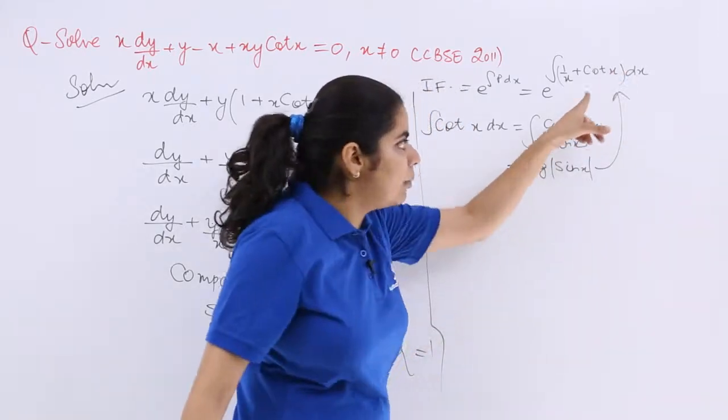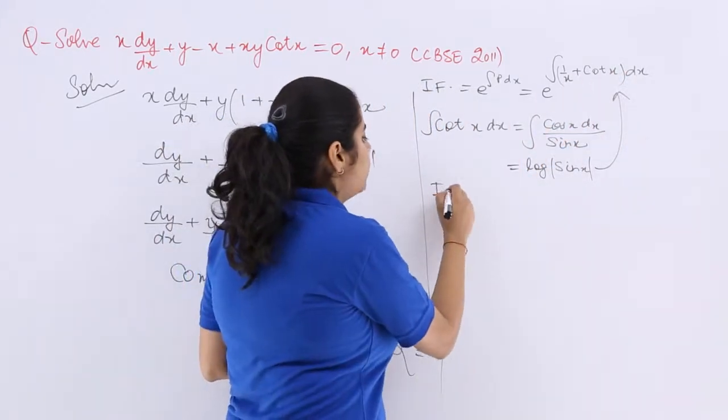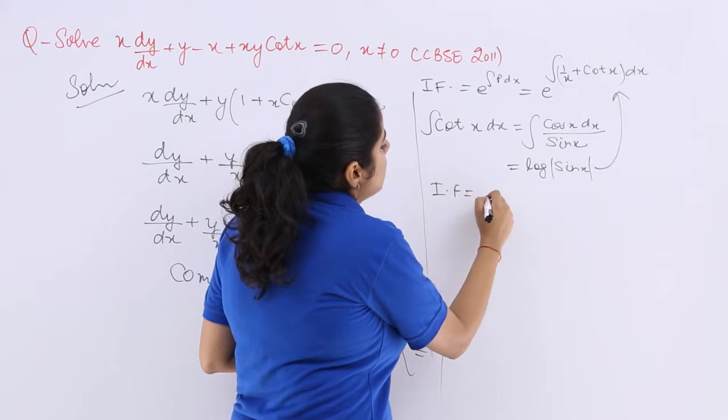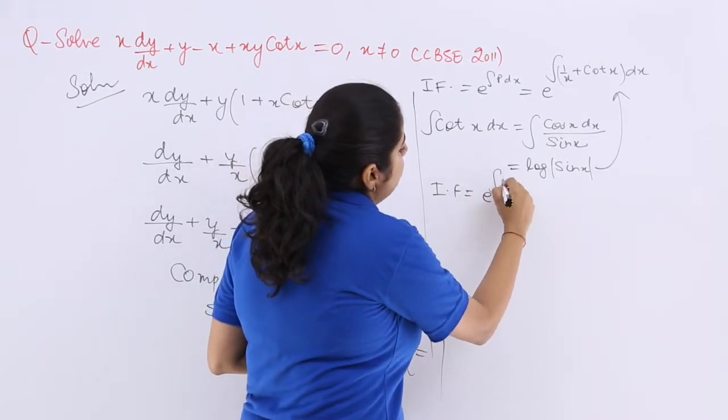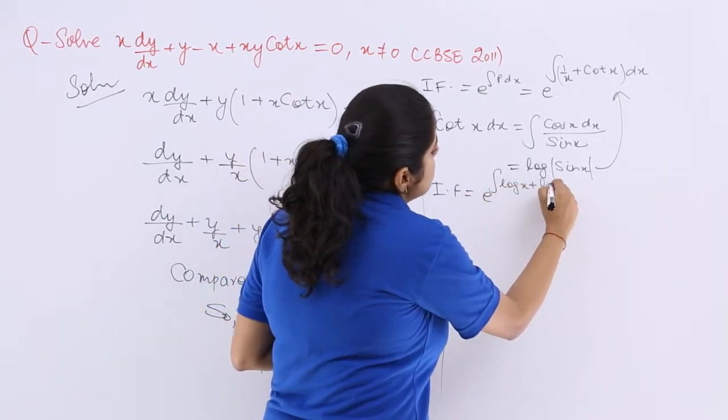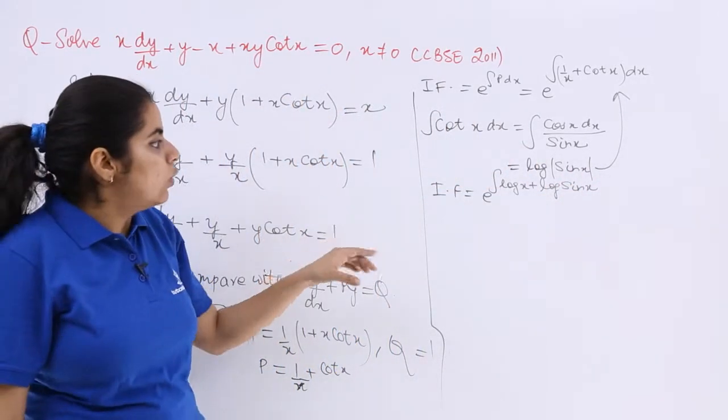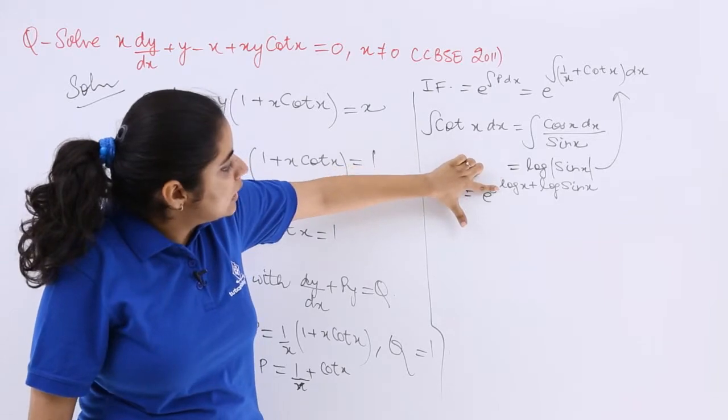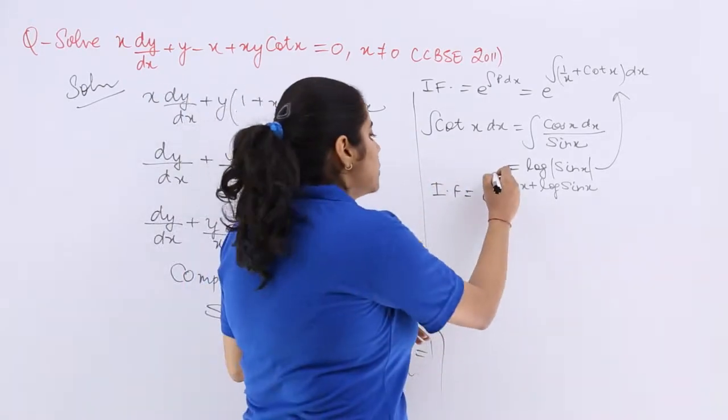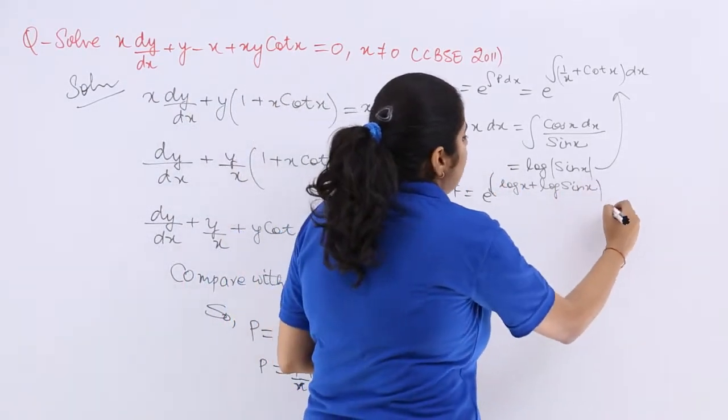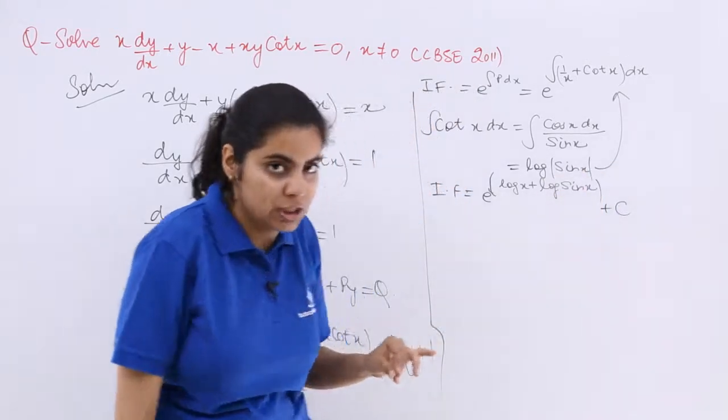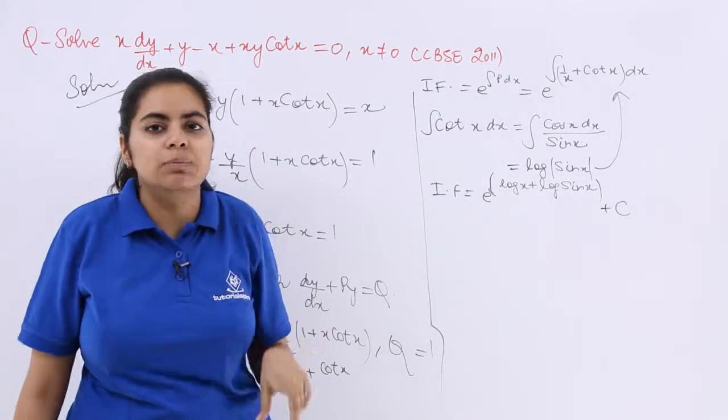Simply you can put in the above thing. So what is your integrating factor? IF is equal to e raised to the power log x + log sin x. Right? Now this can be removed as the sign because integration has been done and you have obtained one constant of integration.